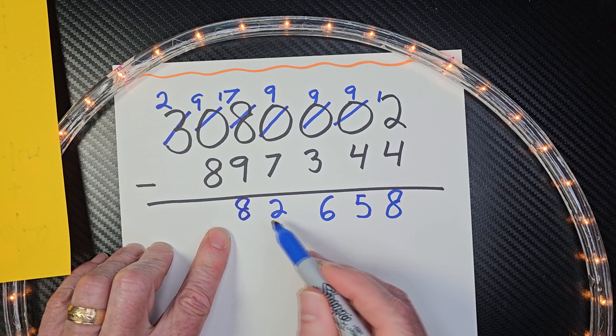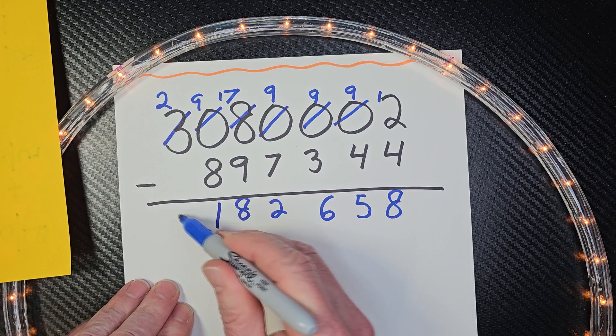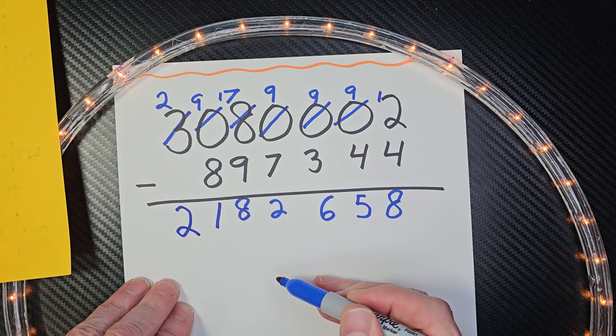My numbers are getting smaller, aren't they? And then 9 minus 8 would be 1. And then just bring that 2 down. Okay. So that is our answer.